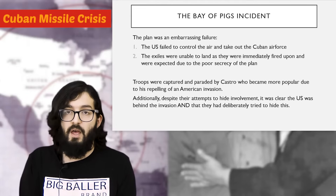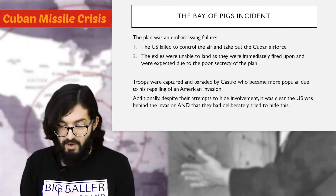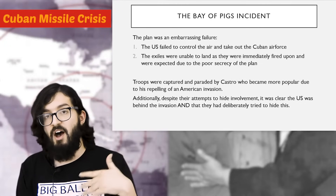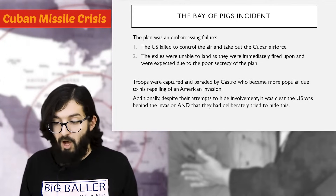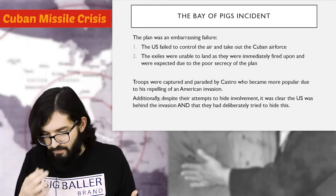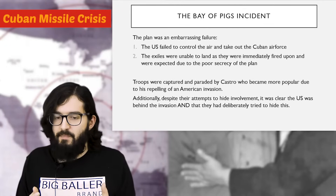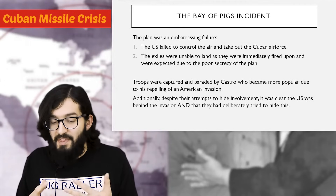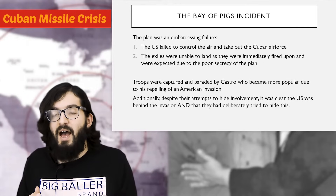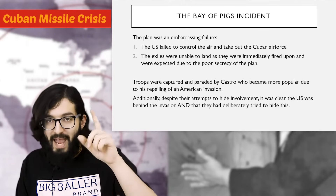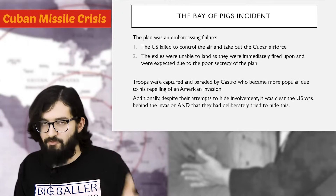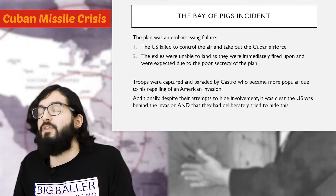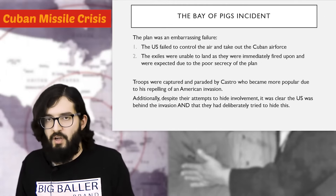The captured exiles were paraded on TV — an international humiliation for the Americans. Rather than weakening Castro, this further entrenched his position and he became more popular from repelling the American invasion. Despite attempting to hide their involvement, it was blindingly obvious this was a US plan, and the whole painting-of-the-planes episode made it clear the US had tried to hide their involvement. It was obviously a terrible plan.